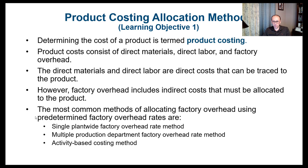The most common methods of allocating factory overhead using predetermined factory overhead rates are: first, the single plant-wide factory overhead rate method, which is very easy, simple, and doesn't cost a lot. Then we have the multiple production department factory overhead rate method, which includes more than one rate. And then we have the activity-based costing, or ABC costing, which is the one we'll spend more time on.